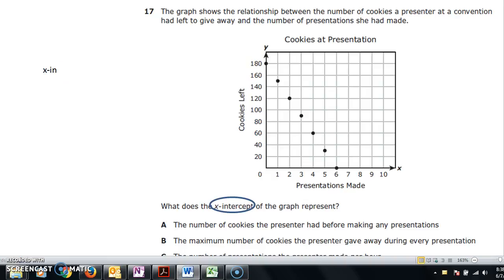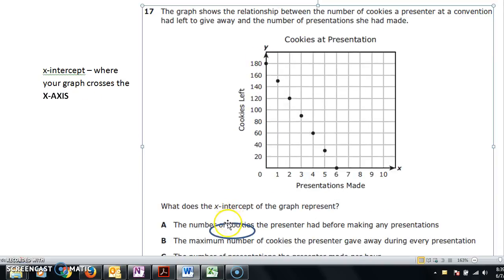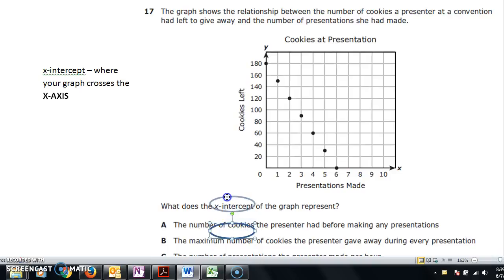X-intercept, where your graph crosses the x-axis. That's why we call it an x-intercept, because it's where your graph crosses the x-axis.